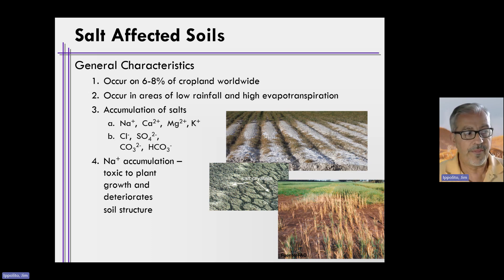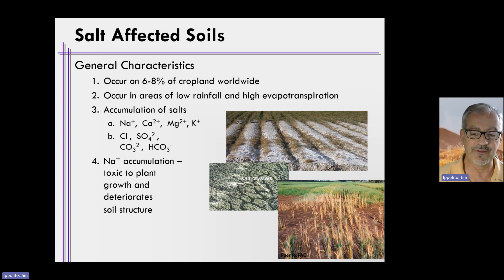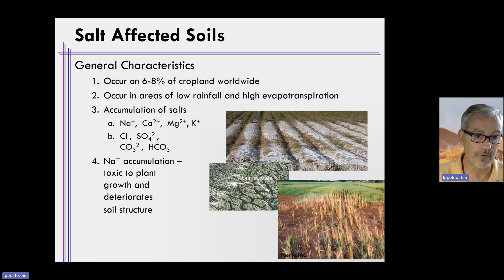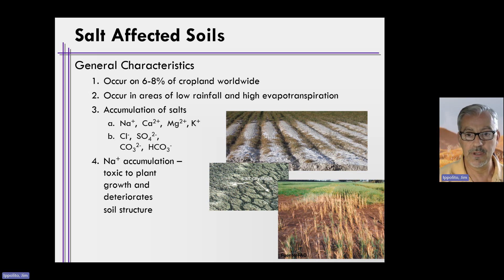When we think about salts, oftentimes many of us just think about sodium. When sodium is the salt affecting the soil, sodium can be toxic to plants — just like toxicity. We may have talked about this earlier in the semester: if an element is in toxic concentrations in the soil, it will kill the apical meristem of the growing tip of the root.